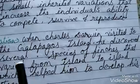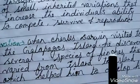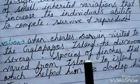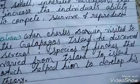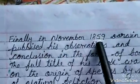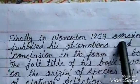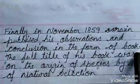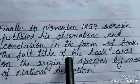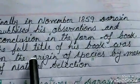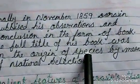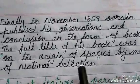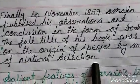When Charles Darwin visited the Galapagos Islands, he discovered several species of finches that varied from island to island, which helped him develop his theory. Finally, in November 1859, Darwin published his observations and conclusions in the form of a book. The full title of his book was On the Origin of Species by Means of Natural Selection.